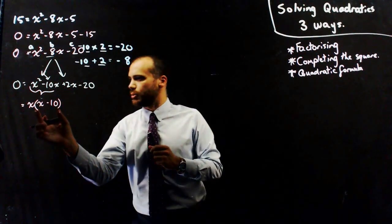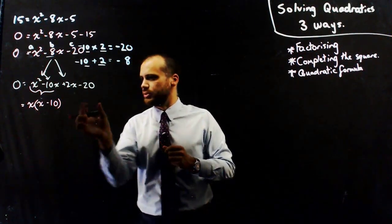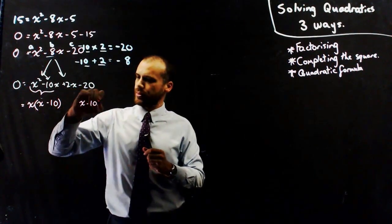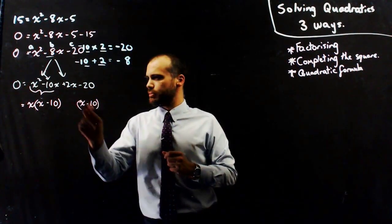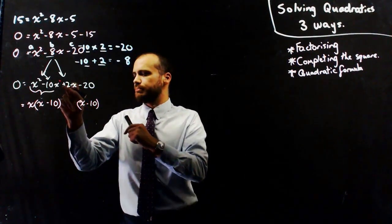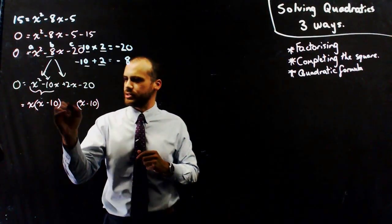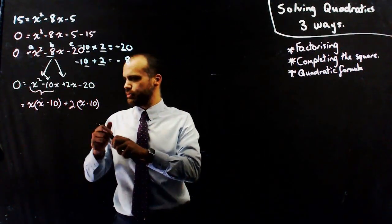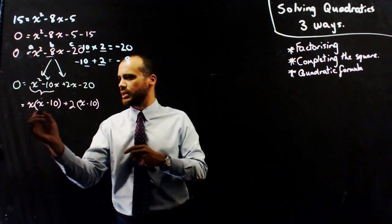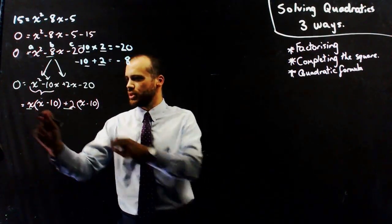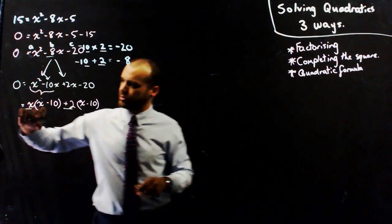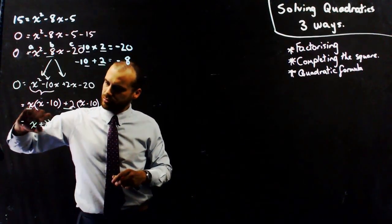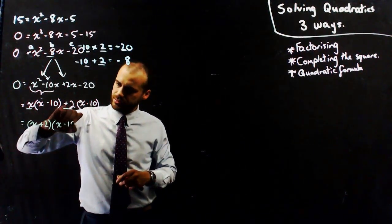If I've done this correctly, I'll have a repeated factor, so x minus 10 will also appear here. And then I'll multiply that by something to make positive 2x minus 20 — in this case, it's positive 2. Because I've got x minus 10 and x minus 10 here, and they're being multiplied by x and positive 2, I can group those together into a bracket, and I'll have x plus 2 times x minus 10.